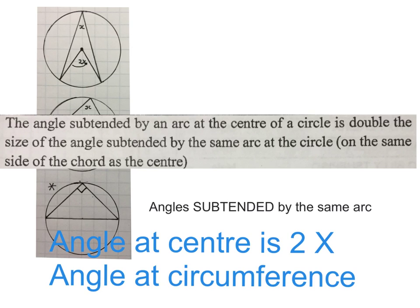The theorem reads that an angle subtended by an arc at the center of the circle is double the size of the angle subtended by the same arc at the circle. Now that's a mouthful. Let's see what that means.